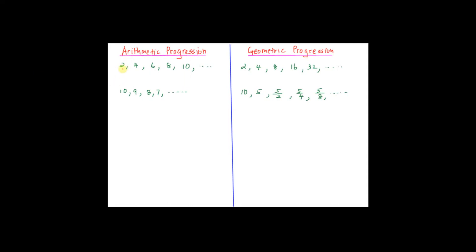Look at the first sequence here: 2, 4, 6, 8, 10. You can see here if you add 2 from the previous term, you will get the next term. This type of sequence, when you add a constant number, is called arithmetic progression. So d is the common difference, which here is 2.